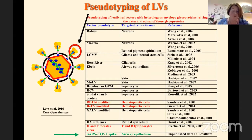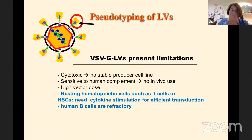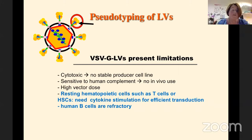Now, pseudotyping of lentiviral vectors. The classical pseudotype used for research in the lab and for clinical trials is mostly the vesicular stomatitis virus G protein, VSV-G. This vector can be produced at very high titers and is very efficient for transduction of many cell types. However, it has disadvantages: it's cytotoxic, so we cannot make a stable producer cell line; it's sensitive to human complement, so we cannot use it in vivo; and we need high vector doses to get therapeutic efficacy.